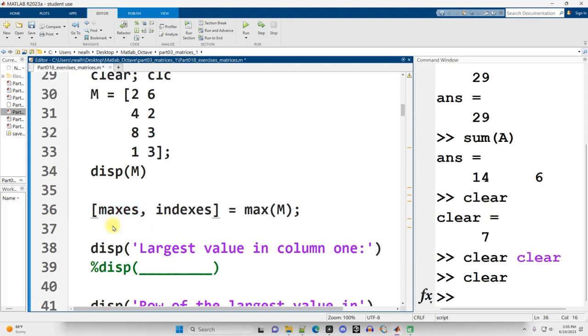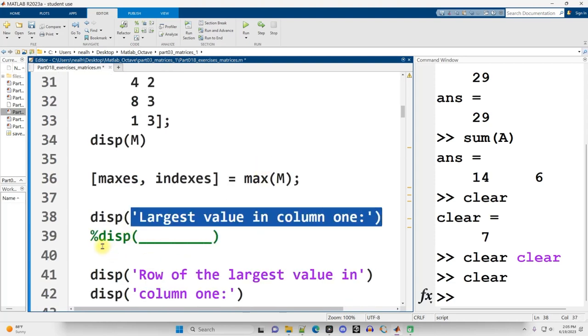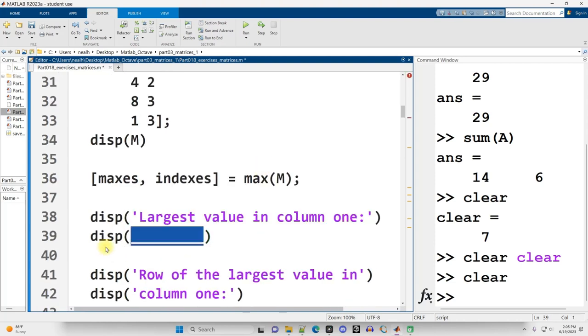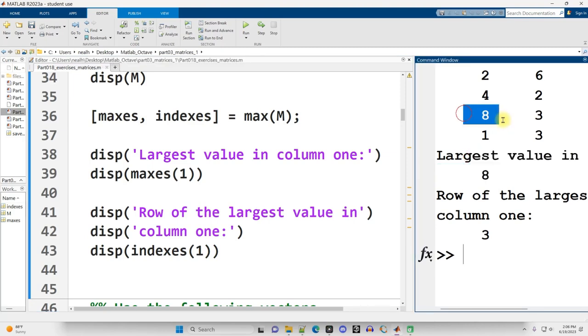So plural of max, I suppose. And then indexes or rows because it's going to be what row the maxes appear on. Since M is a two-column matrix, I should get two results for both of these. Now, we just want to display the largest value in column one. So that's going to be maxes parentheses one because that's the index of that first column. And then similarly, to figure out what row that maximum appears in, we can just say indexes parentheses one. We run that code.